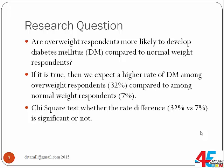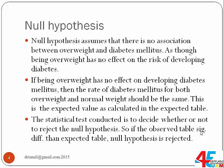The Chi-square test is basically testing whether the rate difference of 32% versus 7% is significant or not. The null hypothesis assumes that there is no association between overweight and diabetes mellitus — as though being overweight has no effect on the risk of developing diabetes. If being overweight has no effect, then the rate of diabetes mellitus for both groups should be the same — this is the expected value as calculated in the expected table.